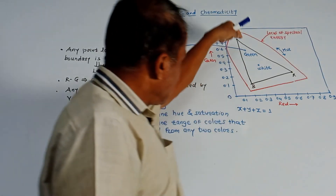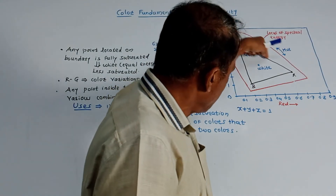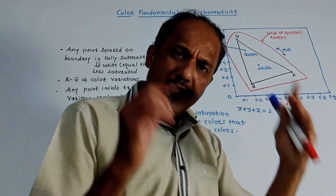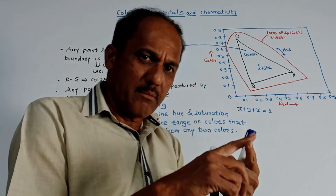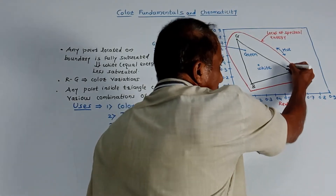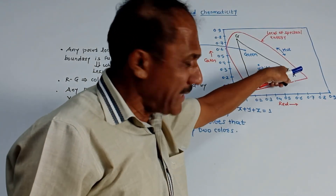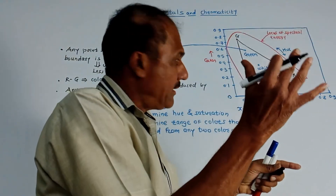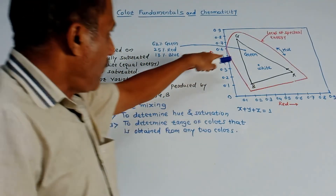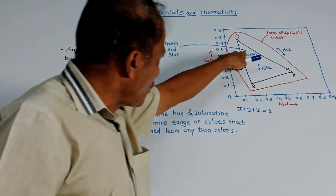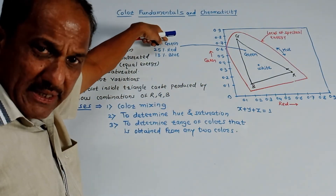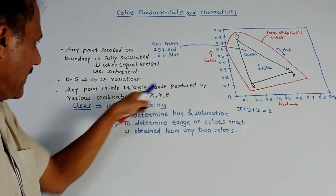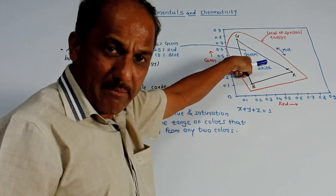If you draw a straight line from red to green, any line drawn between R and G indicates the combination of red and green color content at that particular point. For example, if a point is near the red color, it will indicate that the percentage of red color at that point is more compared to green. So any point present on this line gives the variation of red and green color contents. For example, I have marked a point which contains 62% green color, 25% red color, and 13% blue color. So any point inside the triangle can be produced by various combinations of R, G, B.